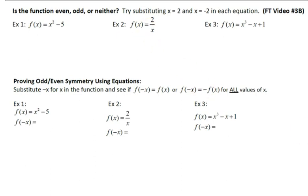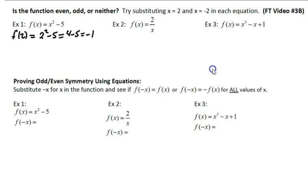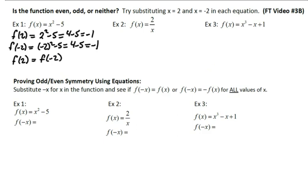So is the function odd, even, or neither? Try substituting both positive 2 and negative 2 in each equation. If we do f(2), we get 2 squared minus 5, which is 4 minus 5, or negative 1. If we put negative 2 in, we get negative 2 squared minus 5, which is still positive 4 minus 5, which is negative 1. So f(2) equals f(-2). Since opposite inputs give the same output, it is an even function.